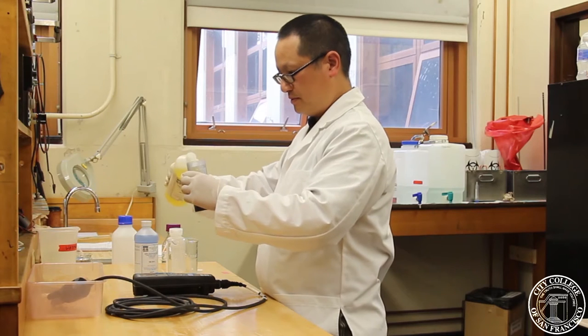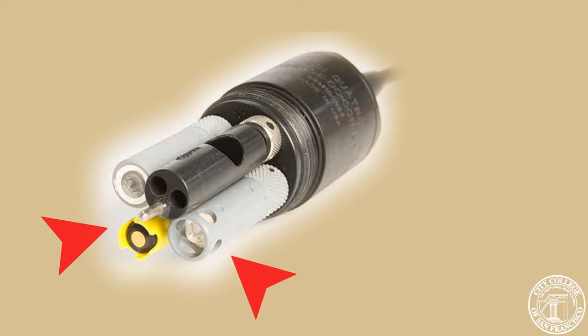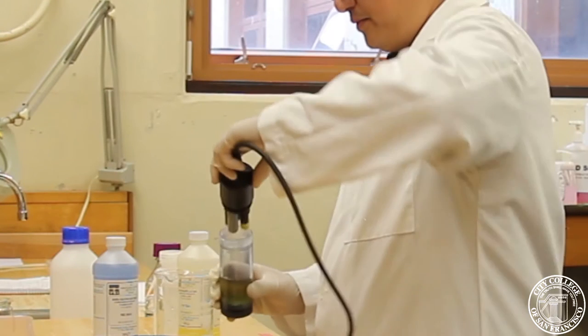Now, we want to fill the cup just enough so it covers the bulb of the pH meter, the bulb and the holes right over there. So, I'll set that down.